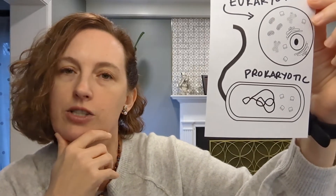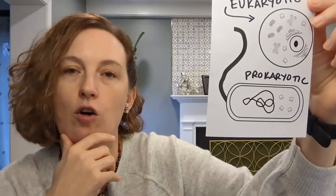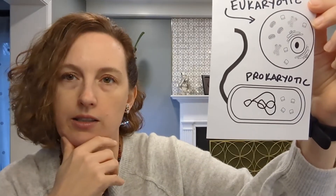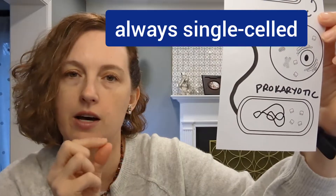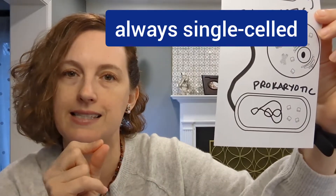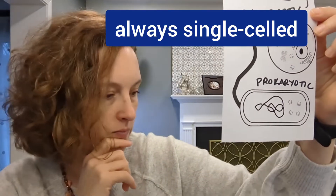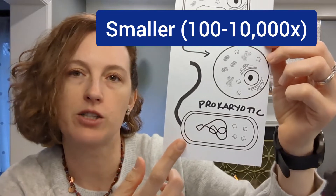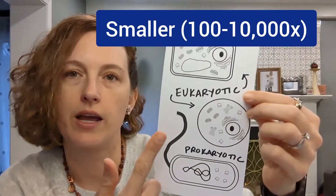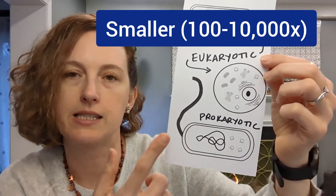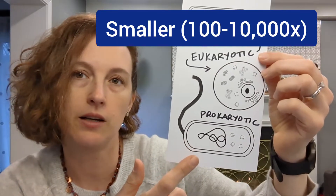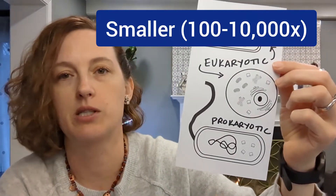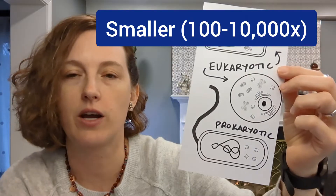So prokaryotic cells are much older, they are much simpler, and they are always unicellular — only bacteria are prokaryotic and bacteria always exist as individual cells. These are much much smaller; even though in the diagram I made them look similar in size, prokaryotic cells are at least a hundred times smaller and up to 10,000 times smaller than eukaryotic cells.